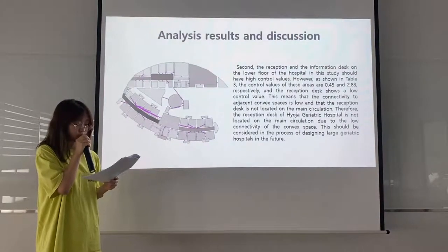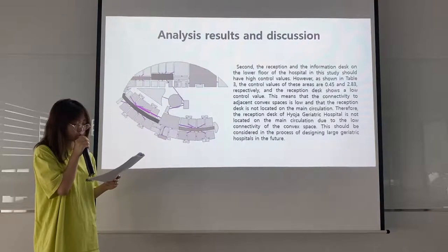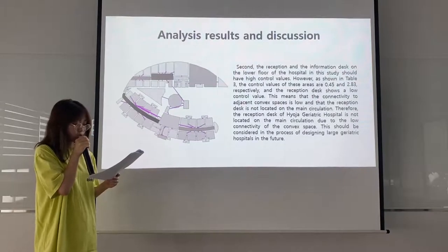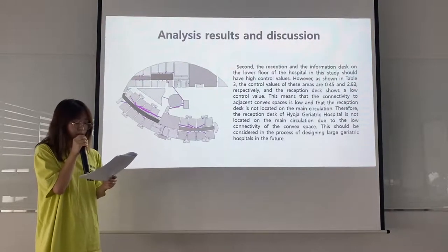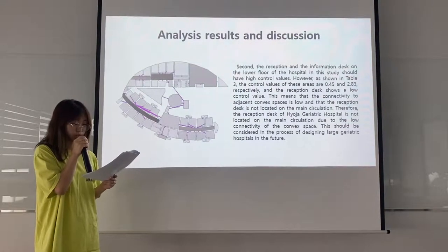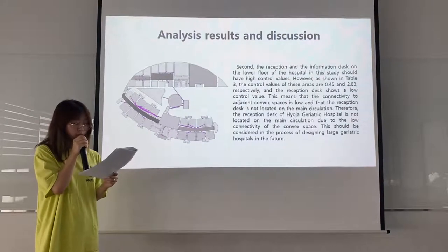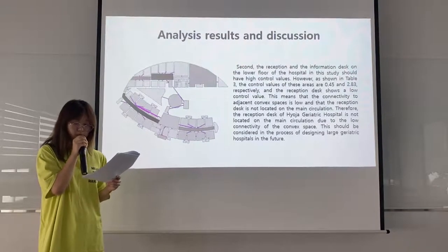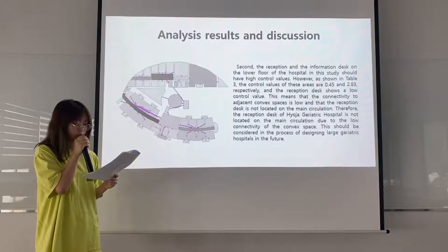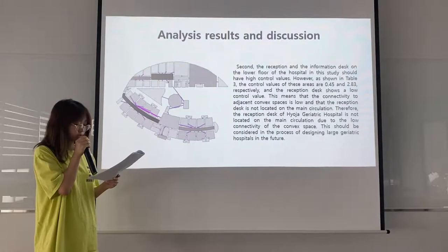Second, the reception and information desk on the lower floor of the hospital in this study should have high control values. However, as shown in Table 3, the control values of these areas are 0.45 and 0.83 respectively, and the reception desk shows a low control value. This means that the connectivity to adjacent convex spaces is low and that the reception desk is not located on the main circulation. Therefore, the reception desk of Hyoja Geriatric Hospital is not located on the main circulation due to the low connectivity of the convex spaces. This should be considered in the process of designing large geriatric hospitals in the future.